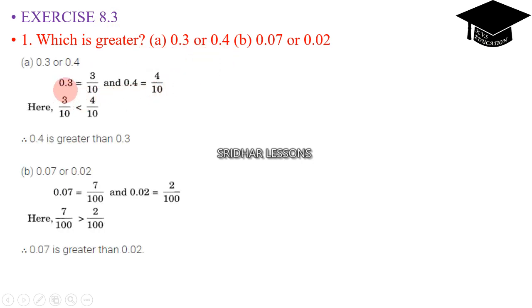Exercise 8.3. Which is greater, 0.3 or 0.4? 0.3 equals 3 by 10 and 0.4 can be written as 4 by 10. They are having equal denominators. So 3 by 10 is less than 4 by 10. Therefore 0.4 is greater than 0.3.